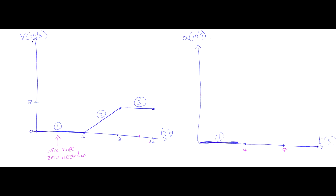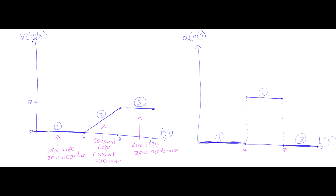So we can draw zero acceleration on our acceleration graph during section 1 — from t = 0 seconds to t = 4 seconds. Section 2 of the velocity-time graph has a constant positive slope, so we can draw a constant positive acceleration on our acceleration-time graph. In section 3, we have a zero slope again — flat — so zero slope means zero acceleration. We draw zero acceleration between 8 seconds and 12 seconds.